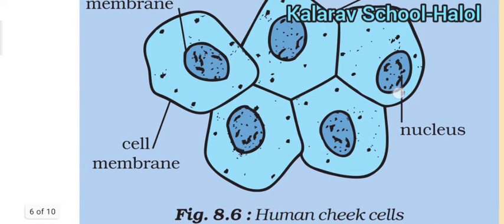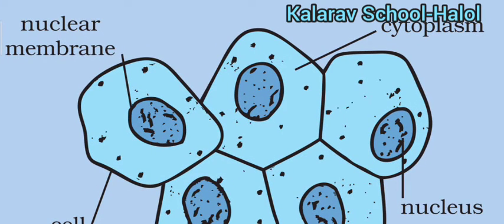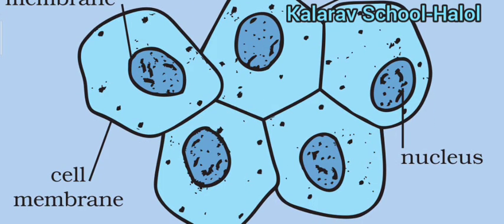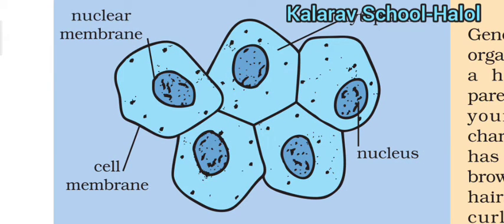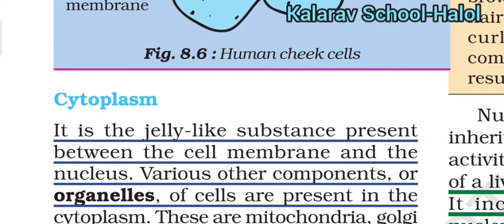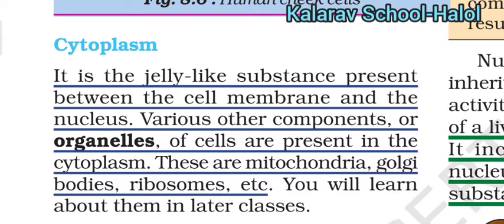Here you can see the structure of a human cheek cell. The jelly-like substance is called cytoplasm, and the central part is called the nucleus. The covering of the nucleus is called the nuclear membrane, and the outer covering of the cell is called the cell membrane. The cytoplasm lies between the nucleus and the cell membrane, and it is a fluid which contains different organelles of the cell.